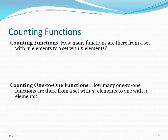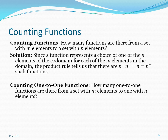Next, we want to see how to count functions. We would like to count how many functions there are from a set with m elements to a set with n elements. A function represents a choice for each element in the domain — there must be a unique element in the co-domain. There are m elements in the domain, and for each one there are n choices, so we multiply n by itself m times, giving n to the m. That's how many functions exist from a set with m elements to a set with n elements.